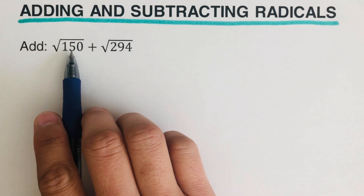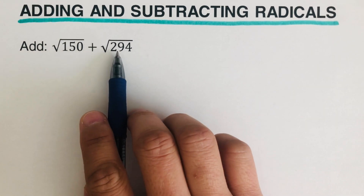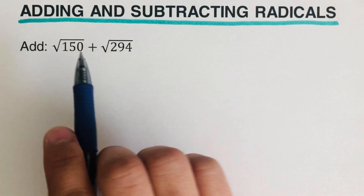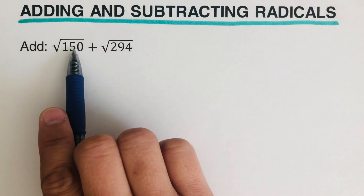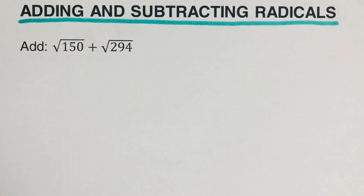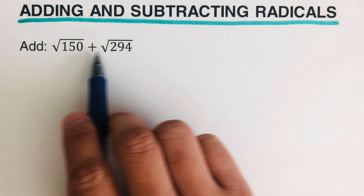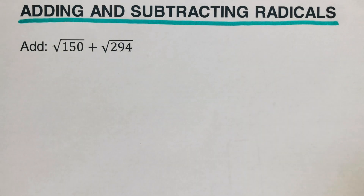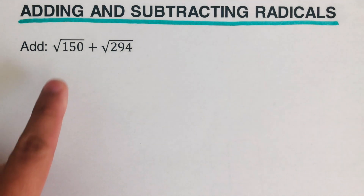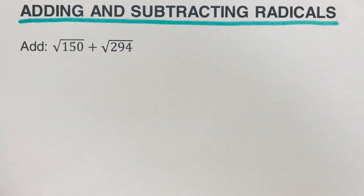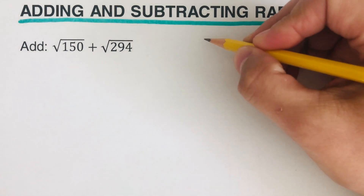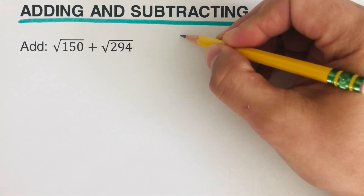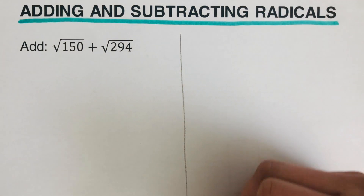So 150 is a radicand and 294 is a radicand. Since these two radicands are not the same, we cannot add them like integers. What we are going to do is simplify these to like radicals. I'm going to show the work right here on how to simplify.